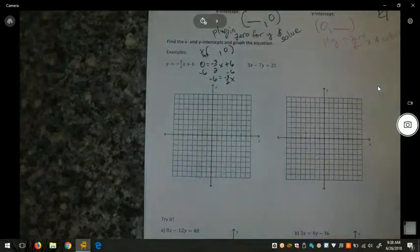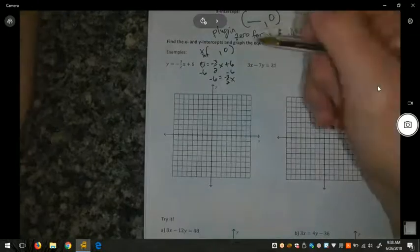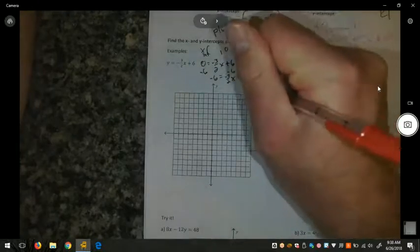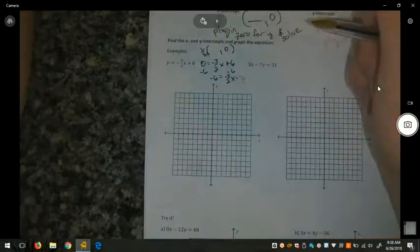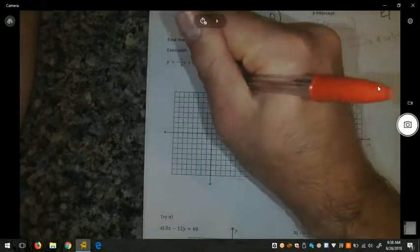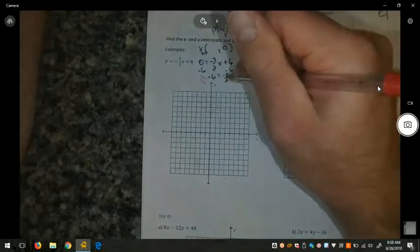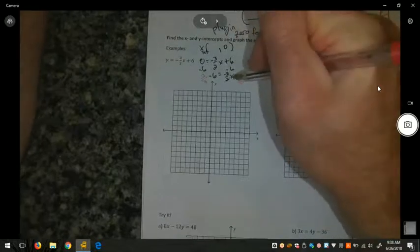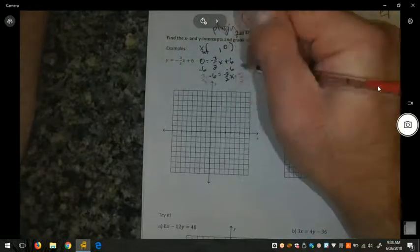To solve for x, I need to undo the fraction of negative 3 halves, which is multiplied by x, by multiplying by the reciprocal times negative 2 thirds, or 2 over negative 3, which is equivalent. The 2's will cancel out, the negatives become positive, the 3's cancel out. I now have x equals 12 thirds, which is 4.